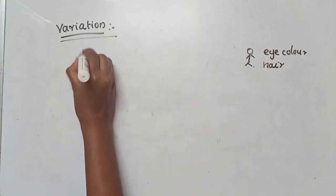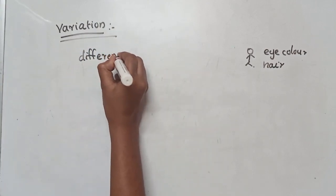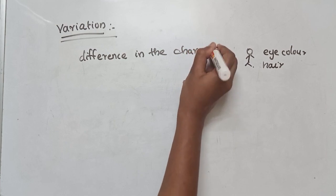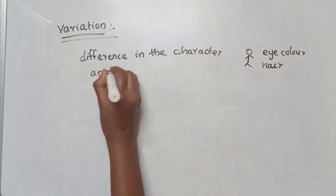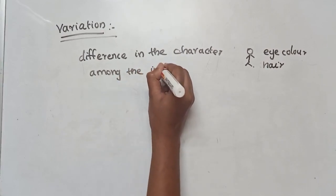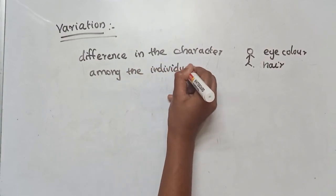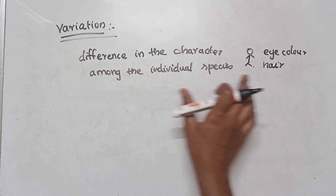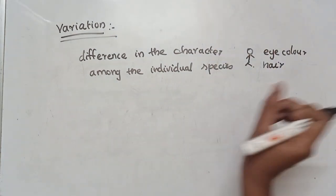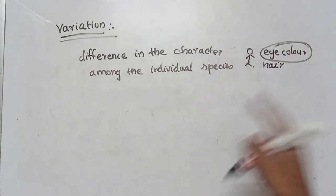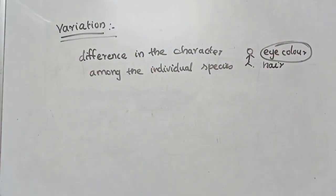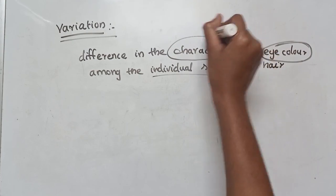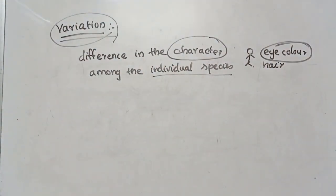There is a variation among these characters. So what is variation? Variation is the difference in the characters among different individuals of the same species. For example, humans — different individuals of the same species show differences in particular characters. That difference is called variation.